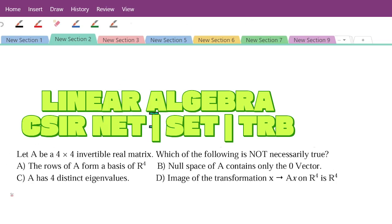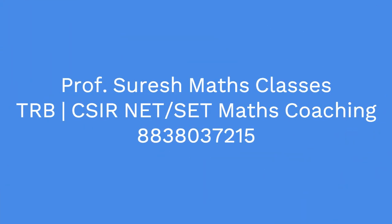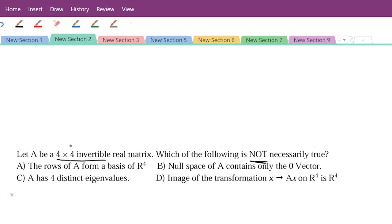Consider an invertible real matrix A of order 4. The question asks: which of the following is not necessarily true? Even if you don't know the definitions of basis, null space, or image of a transformation, at least read the question fully. We are asked to find which one is not true. Take one matrix satisfying the given condition — the matrix should be invertible.